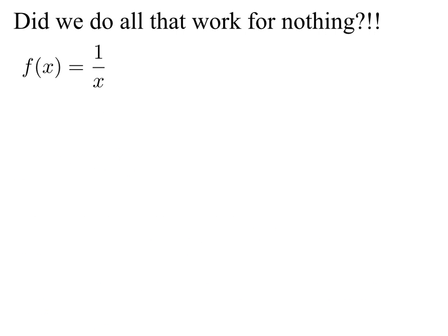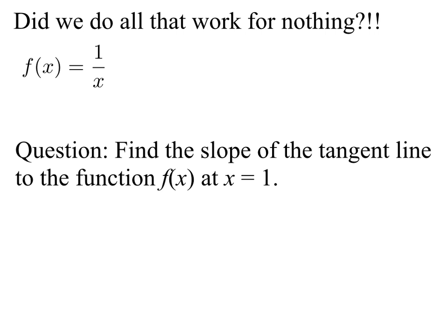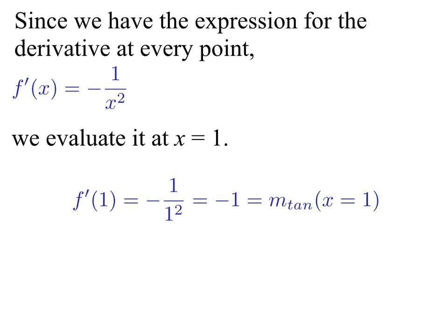Did we find that derivative for nothing? No — because f'(x) = -1/x² only has an issue at x = 0 and works fine for all other points. Let's consider another question: find the slope of the tangent line to f(x) = 1/x at x = 1. The slope of the tangent line is the derivative, and we've already calculated it. We just evaluate f'(x) at x = 1: -1 / 1² = -1. So the slope of the tangent line at x = 1 is -1.